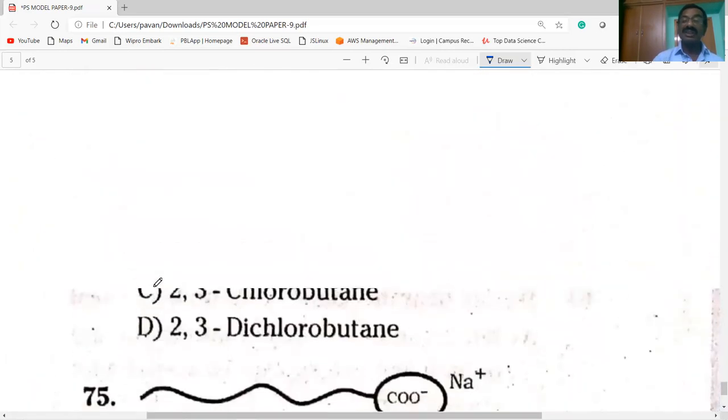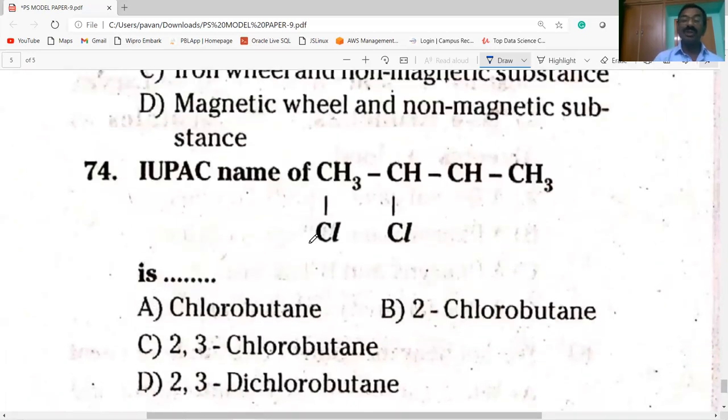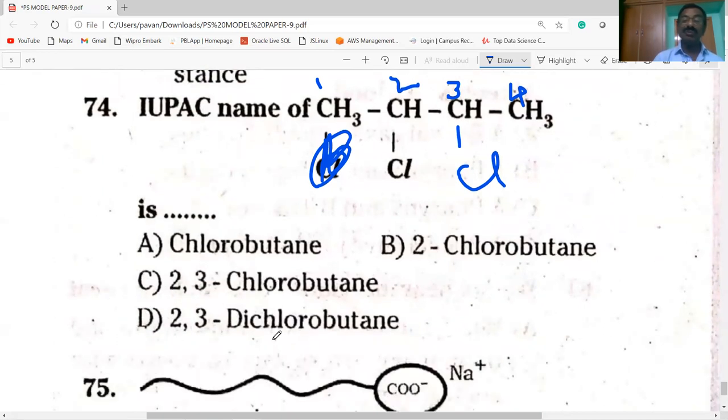IUPAC name of the following compound. It must be in this carbon. Now the numbering: one, two, three. One, two, three. Chlorine at position one. Four carbons is butane. Two chlorine atoms, so it is two, three dichlorobutane.